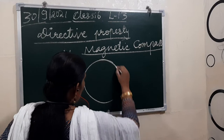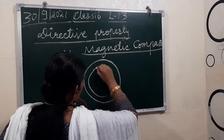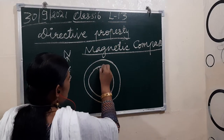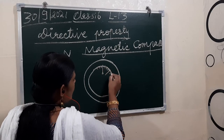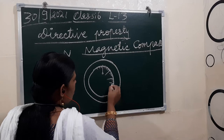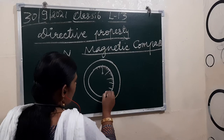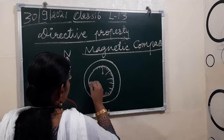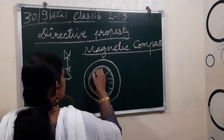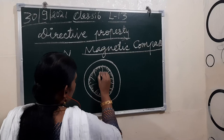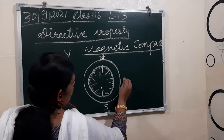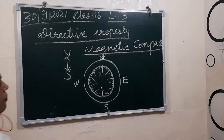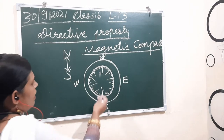What is a magnetic compass? This device is used for finding directions. It is a small box covered with glass on top. On it, readings are marked just like a normal scale. The four directions — north, south, east, and west — are marked on it.